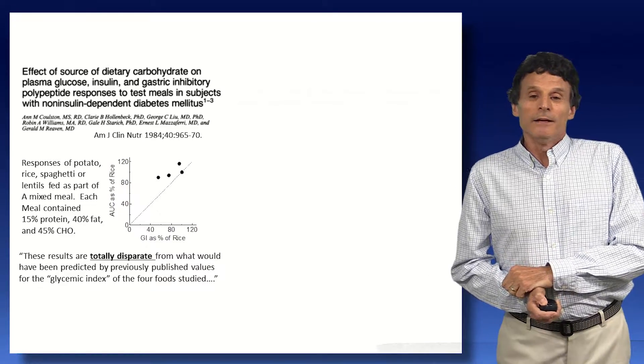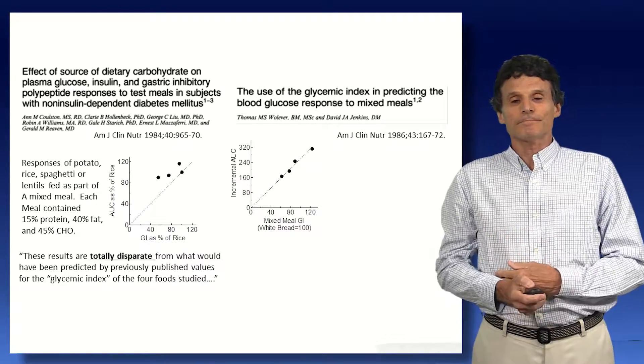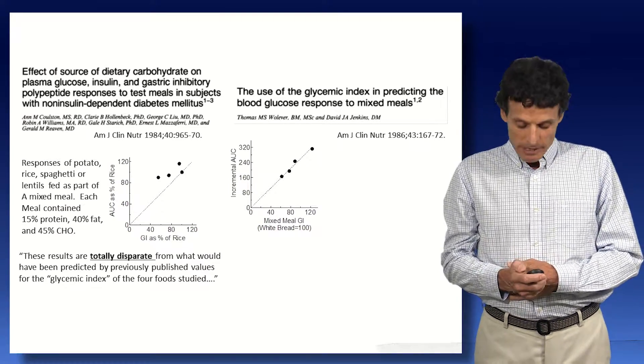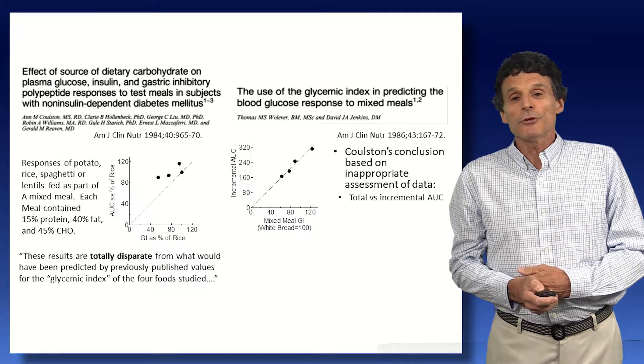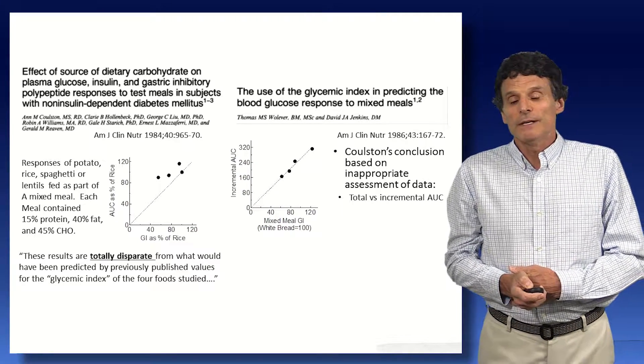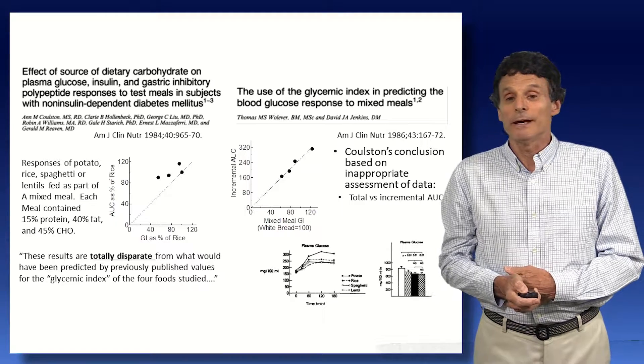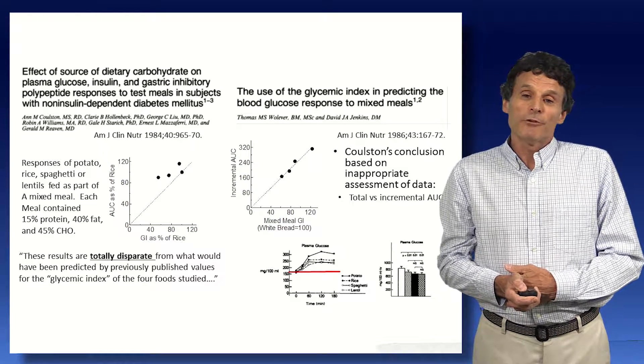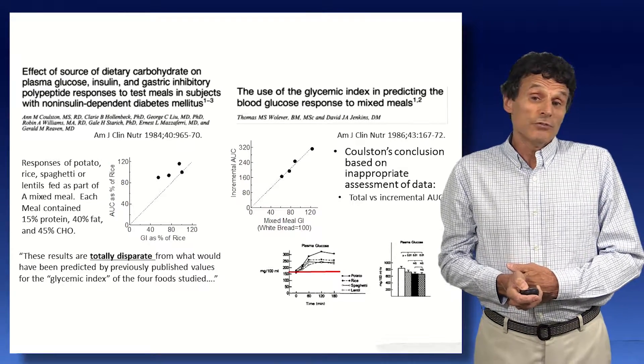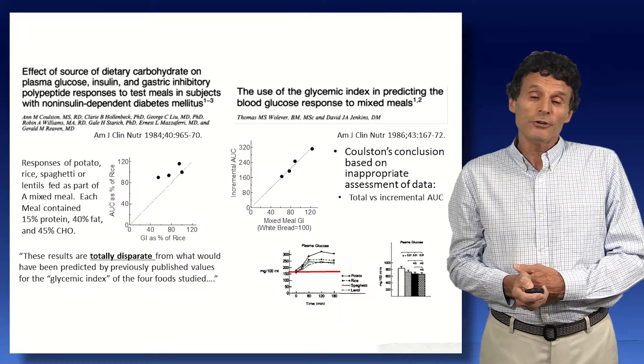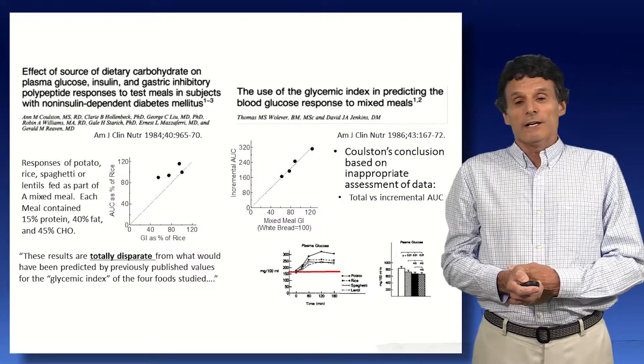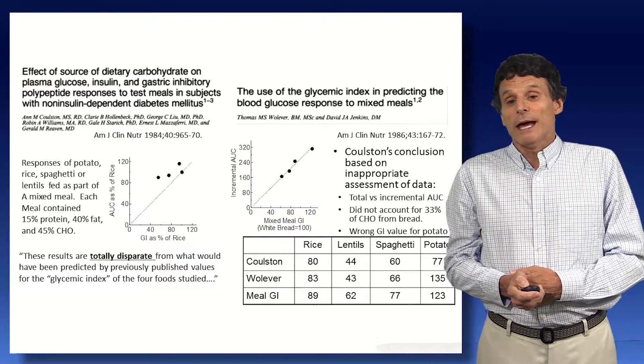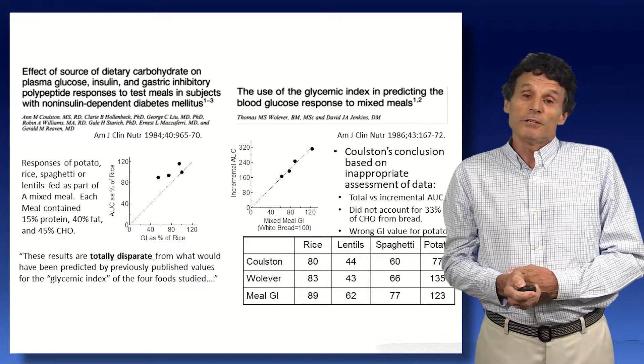So when I looked at those results, we published a paper to demonstrate how to calculate a mixed meal GI, and we thought they had done some inappropriate assessment. First, they'd done total versus incremental area. These are their data. The total area under the curve goes down to zero. The increment is only that above the red line, and that shows the differences between foods relatively are much greater. That is what the GI is based on. So we need to compare the same type of calculation, and when we do that, you see the areas' relative differences are much bigger.